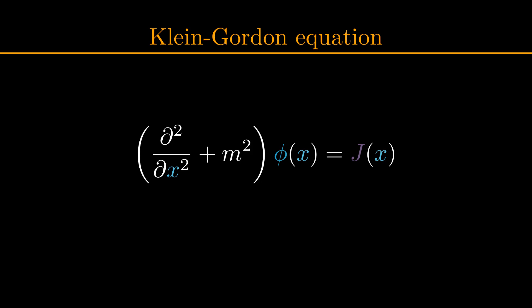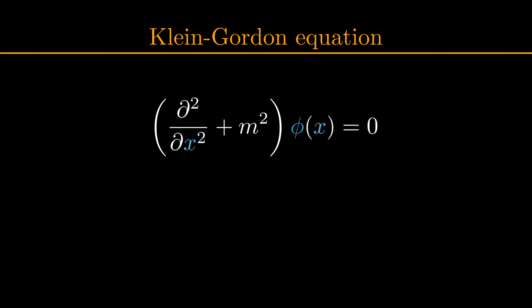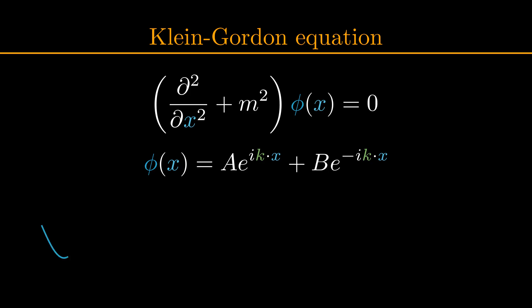For example, when the source function j is 0 everywhere, we find that the field function results in simple wave equations, as I have derived for you in section 2 of my document. To see how more interesting sources affect the field function phi, let us have a look at three examples.